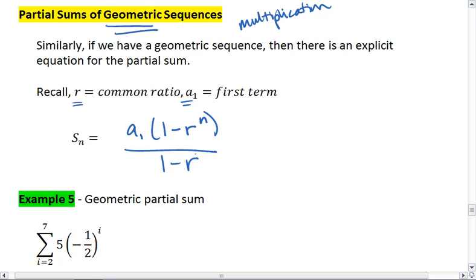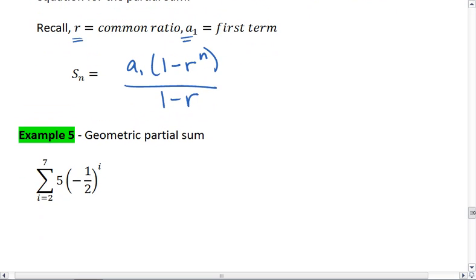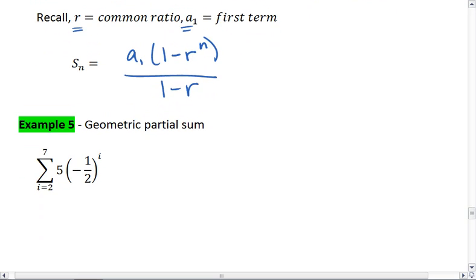And the easiest way is just to look at an example. So for example 5, we're looking at the sum from 2 to 7 of 5 times negative 1 half to the i.